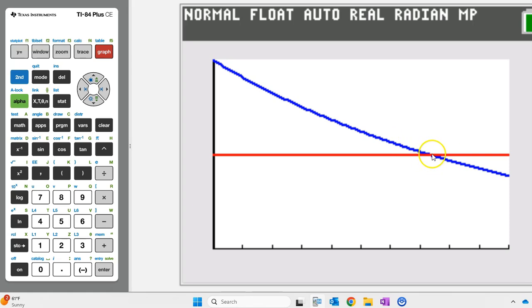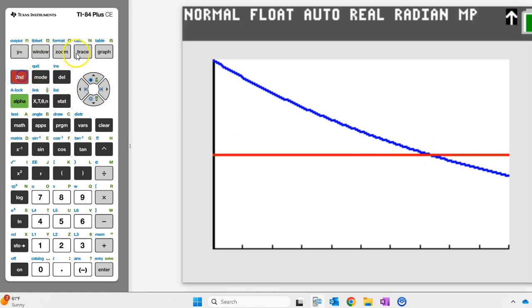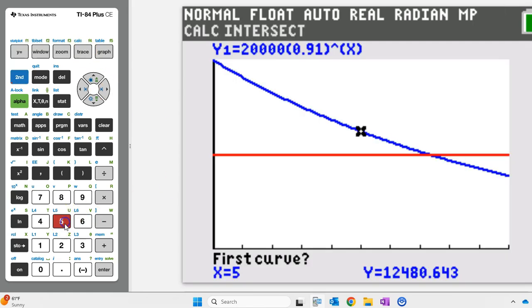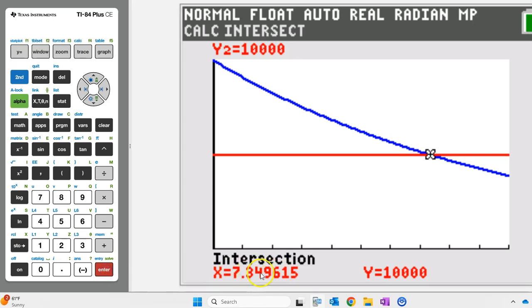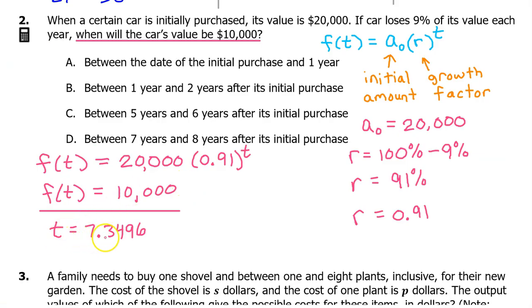So we just need to find this intersection point. Hit second, trace, and choose option 5 for intersect. Move the pointer close to the point of intersection and hit enter three times. And there it is, 7.3496. The College Board will accept three decimal places, but students often will lose a point for rounding incorrectly. So I recommend always using four decimal places and never trying to round. So t equals 7.3496 years is between seven years and eight years. So the answer is D.